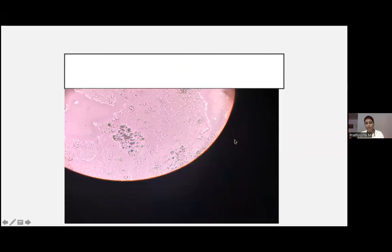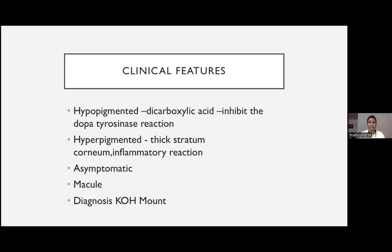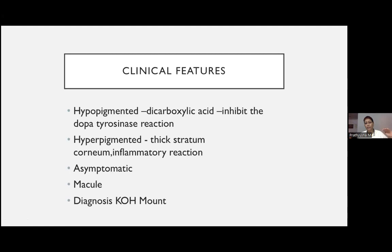Hypopigmented tinea versicolor occurs because of dicarboxylic acid secreted by this fungus, which inhibits the DOPA-tyrosinase reaction — an important pathway in melanin formation. If that pathway is inhibited, melanin is not produced, resulting in hypopigmented lesions. Tinea versicolor will be asymptomatic, presenting as a macule, and diagnosis is by KOH mount.